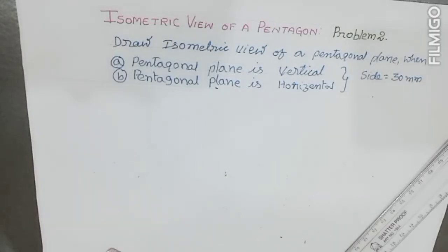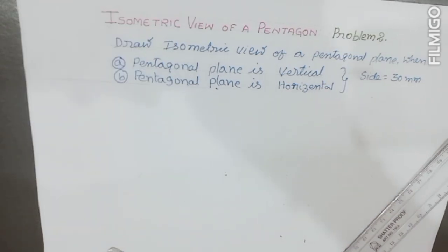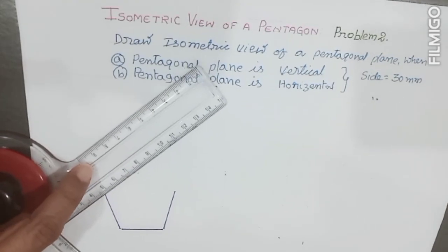Welcome to the discussion of isometric view of a pentagon. The given problem is: draw the isometric view of a pentagon plane when the plane is vertical and when the plane is horizontal, with a side of 30 mm. To start this problem, we first have to draw the orthographic projection — that is, the front view — since when the plane is vertical, we draw the front view.